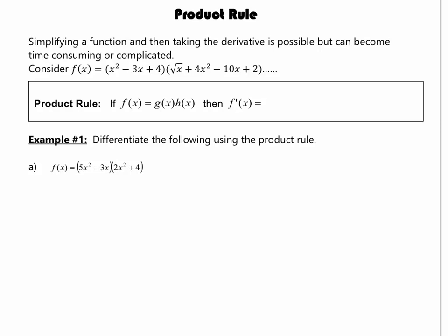Today we're going to learn another derivative rule called the product rule. We use the product rule when we have a combination of two functions — like two binomials, trinomials, or polynomials multiplied together. One option would be to multiply them out and expand them, but as things get more complicated we need another rule, and you simply can't just take the derivative of each piece.